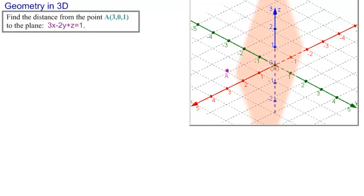And here is our plane, and of course distance requires two points. So we need to find a point on the plane that's closest to this point A. How do we do that?